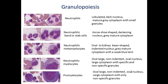Looking at granulopoiesis, we can see the mature neutrophil with a lobulated nucleus and thin portions of nuclear plasma pinching the nucleus off and making the lobes. As we go to a less advanced stage, we see a horseshoe-shaped nucleus and cytoplasm that still looks the same kind of gray.